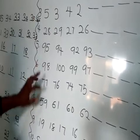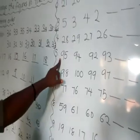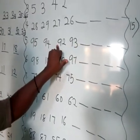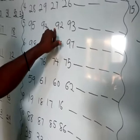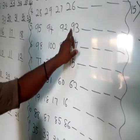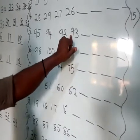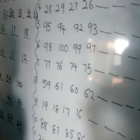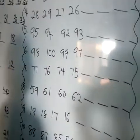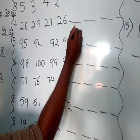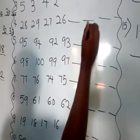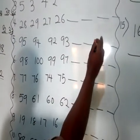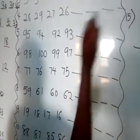Number 5: we have 95, 94, 92, and 93. Which number comes first? We have 92 as our first number. Write it down. Let's count: 92, 93, 94, and 95.